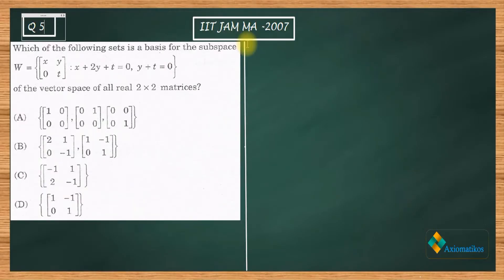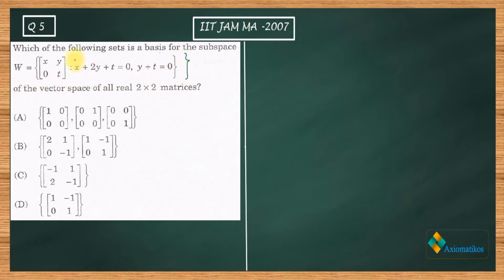Hello dear students, welcome to Axiomaticos. This video is part of the solution series for IIT JAM 2007. We are here with Problem 5 from the topic Linear Algebra. The problem asks: which of the following sets is a basis for the subspace? This is a subspace of the vector space of all 2×2 matrices. You have four options and you have to choose the basis.